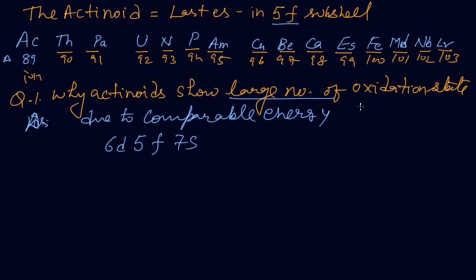One more last question: name a member of the lanthanide series which is well known to exhibit oxidation state +4. Plus 4 is shown by cerium because its atomic number is 58. It loses 4 electrons and gets the xenon 54 stable configuration.